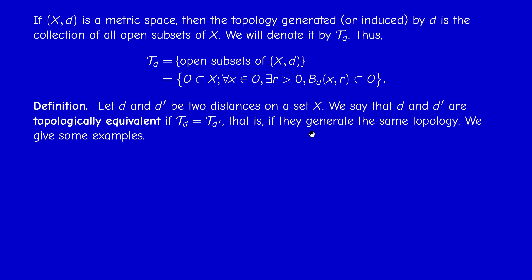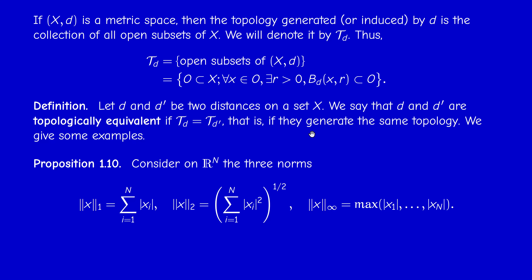We will give some examples and state a methodology to prove that two distances are topologically equivalent in terms of balls. The first example is recorded as a proposition. On ℝⁿ we have three familiar norms: the norm 1, the Euclidean norm, and the infinity norm. For n equal to 2, we drew the balls with respect to these norms.